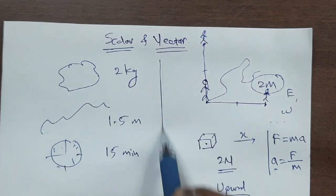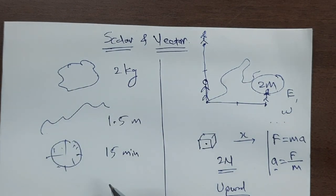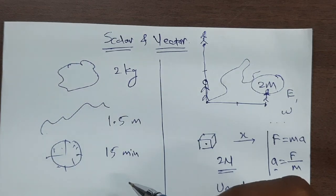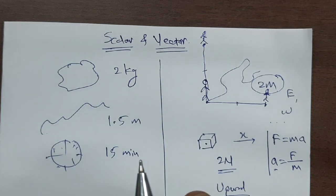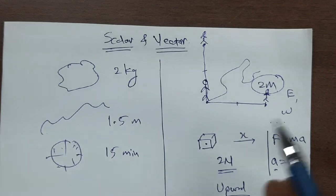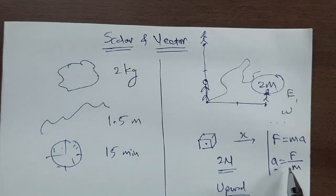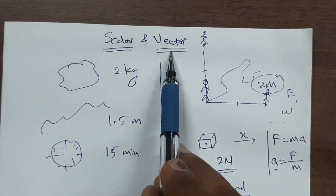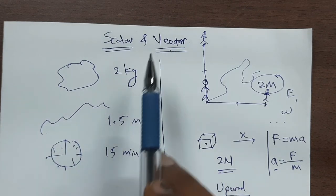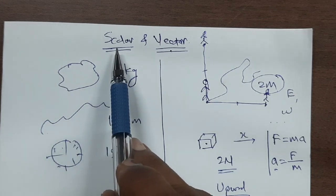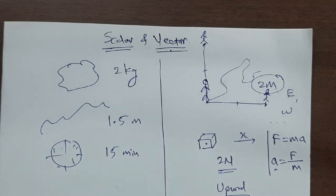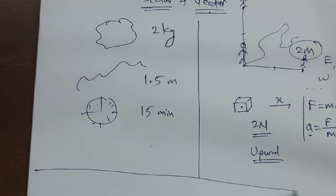You will observe that mass, length, and time are physical quantities that can be completely described with no additional information required — just the magnitude is sufficient. These are scalar physical quantities. Whereas for quantities like displacement and force, their complete description requires direction along with magnitude, and hence these are known as vector physical quantities. This is basically the difference between scalar and vector physical quantities.